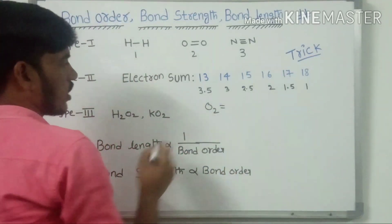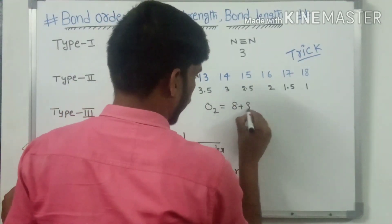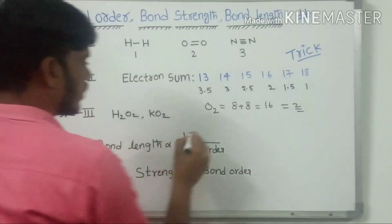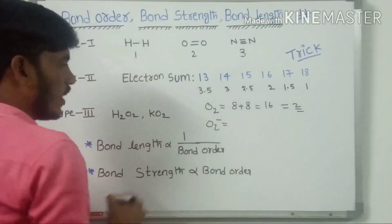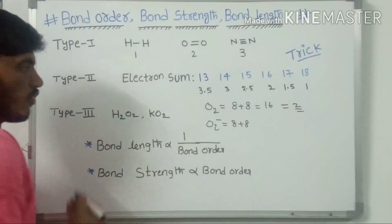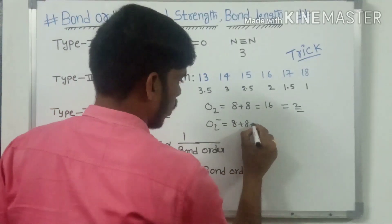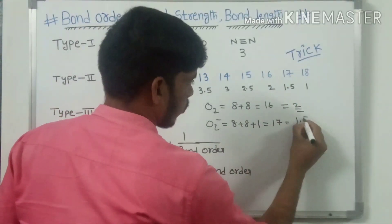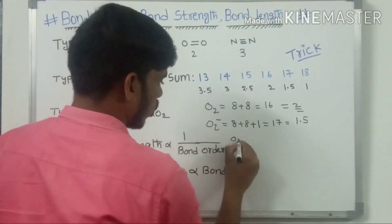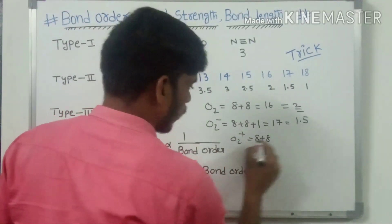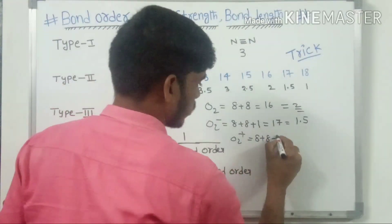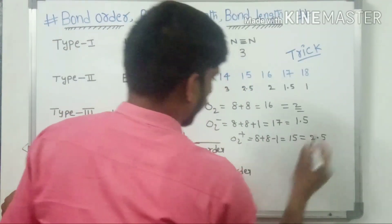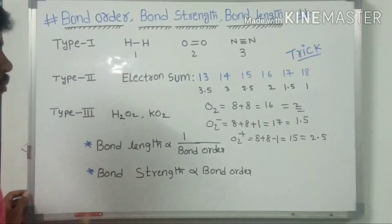For example, O₂: sum of electrons = 8 + 8 = 16, therefore bond order is 2. For O₂⁻: 8 + 8 + 1 (for the negative charge) = 17 electrons, therefore bond order is 1.5. For O₂⁺: 8 + 8 − 1 (for the positive charge) = 15 electrons, therefore bond order is 2.5. This is the electron sum method.